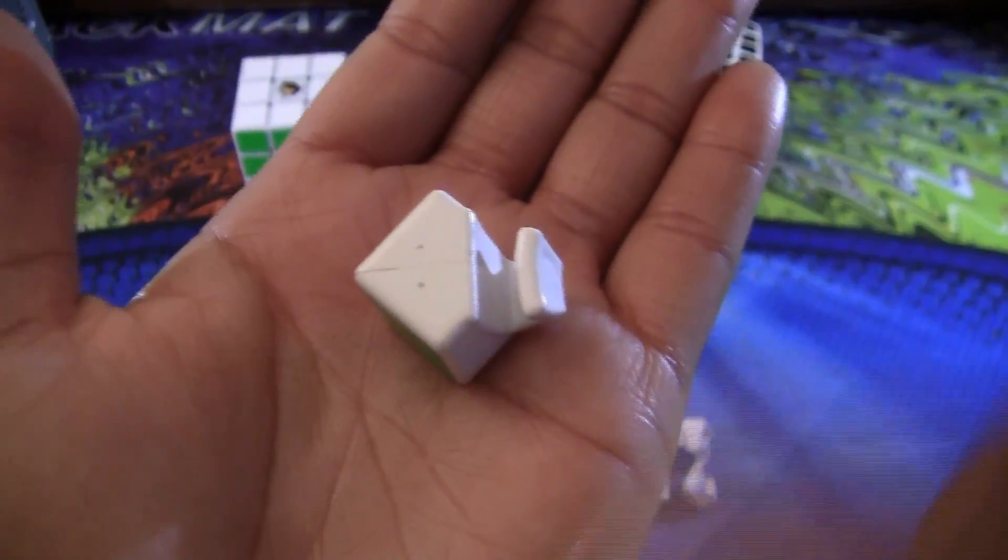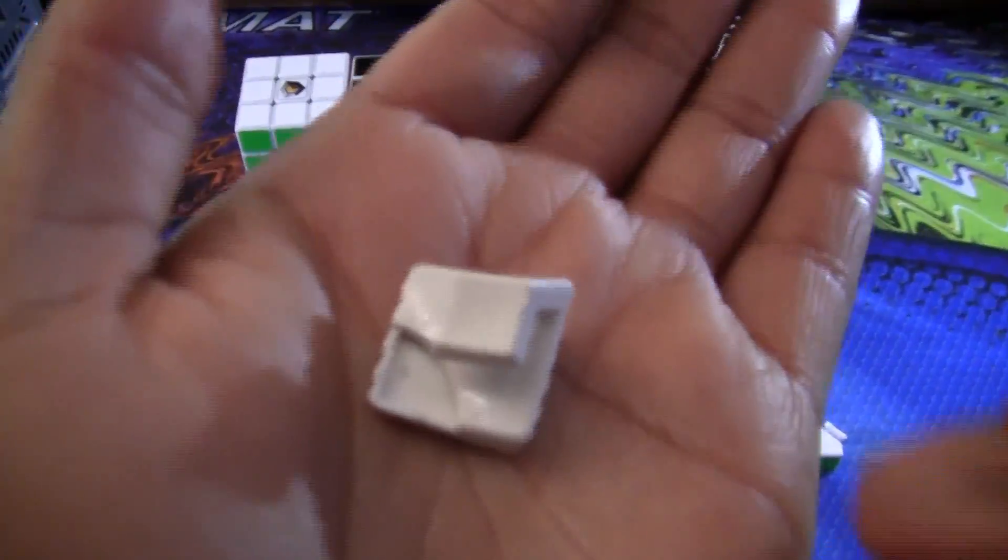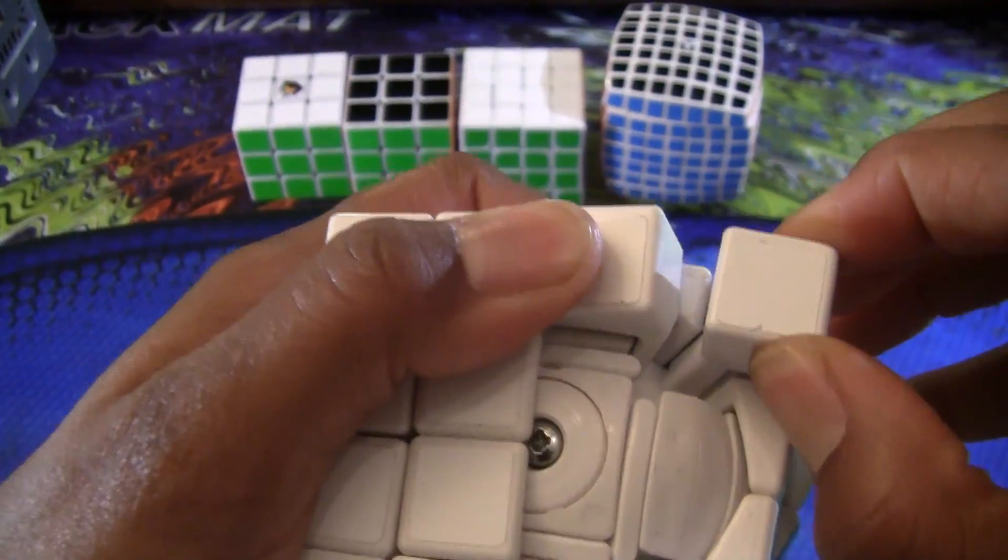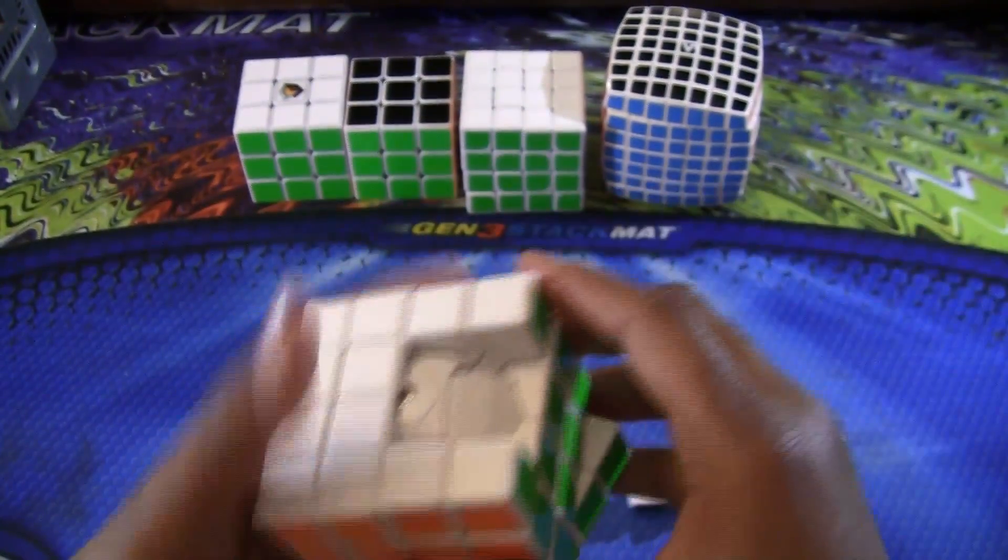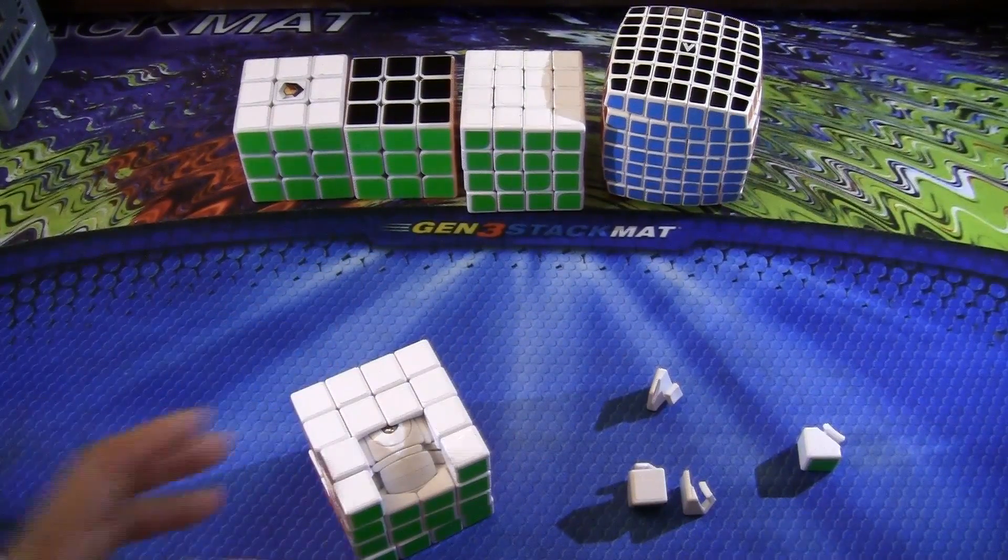And then here is an edge piece. Here is a center piece. And the corner kind of looks like that. It's really big, it's really big down in there. So it's kind of hard to take out and a little hard to put in.